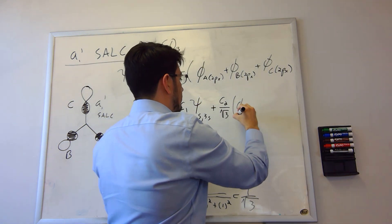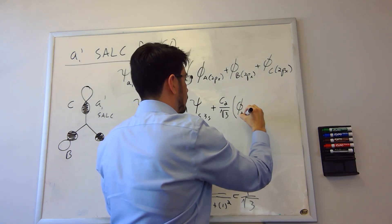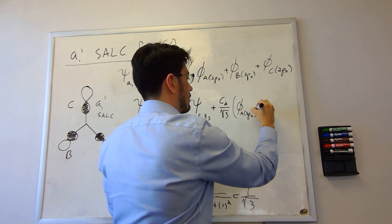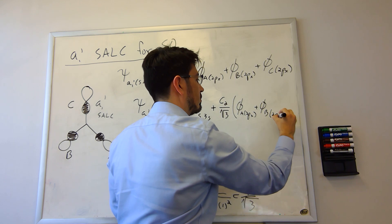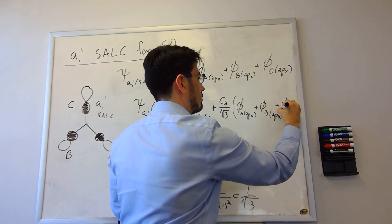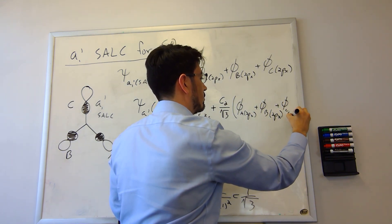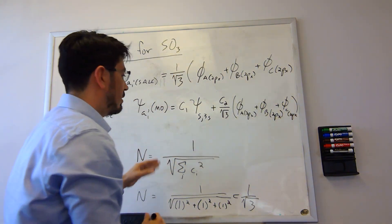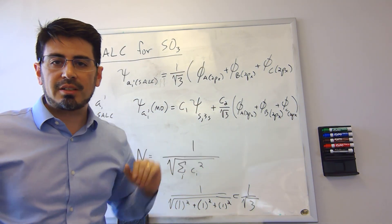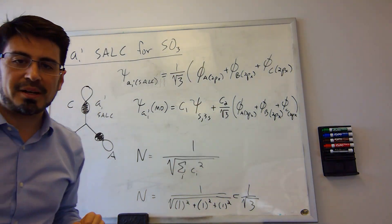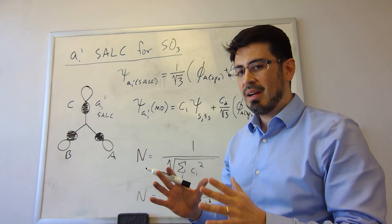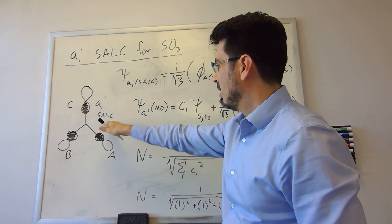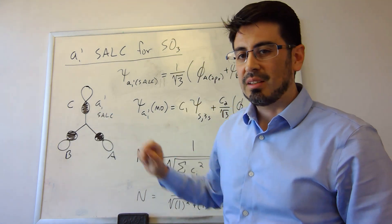So then we just add up, we just bring down this SALC down here. So now we have the wave function in mathematical form. And in chemistry, of course, we like diagrams and schematics. And so what we want to do is now translate that to making the MO here.